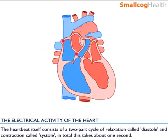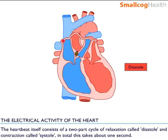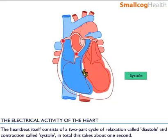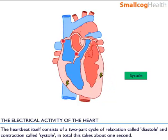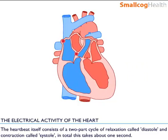The heartbeat itself consists of a two-part cycle of relaxation called diastole and contraction called systole. In total, this usually takes about one second.